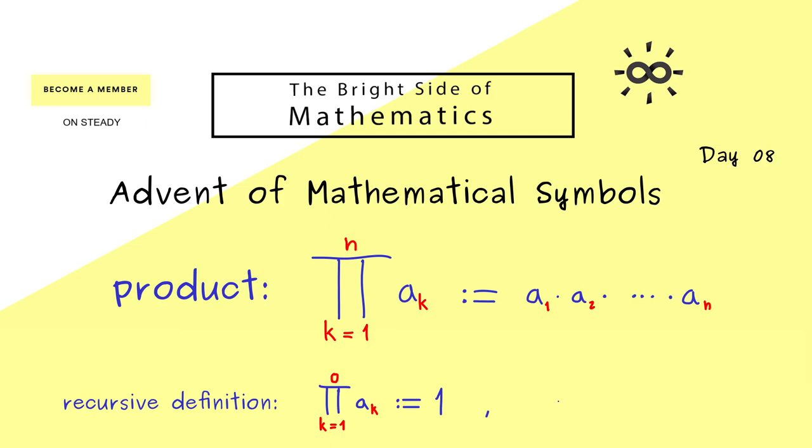And now you might already know for a recursive definition we have to say what happens to the successor when we know the predecessor. This means that here on the right hand side we have the product that goes from k equals 1 to n-1, and we want to reach this product where k goes from 1 to n. And of course the only meaningful thing would be to multiply on the right hand side with a_n.